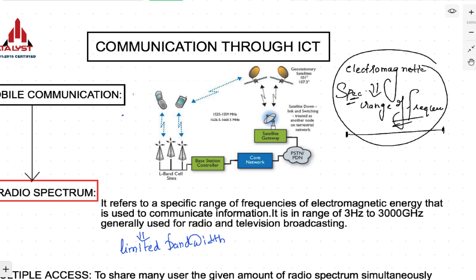Radio spectrum is basically the specific range of frequency of electromagnetic energy that is used to communicate information. In broader terms, the spectrum is a bigger range of electromagnetic radiations, and from that you select a particular portion used for communication — that is known as radio spectrum, which lies from 3 Hz to 3000 GHz. This range is used for radio, television, and all kinds of communication.